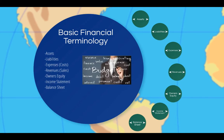Before we can discuss strategy and financial issues surrounding logistics, we first need to examine the basic financial terminology often used in business and logistics. Logistics managers in every organization are expected to use financial information to help them make decisions, allocate resources, and budget expenses. So having a basic understanding of financial terminology such as assets, the balance sheet, the income statement, expenses (also known as costs), revenue (also known as sales), and owner's equity is important for logistics managers.